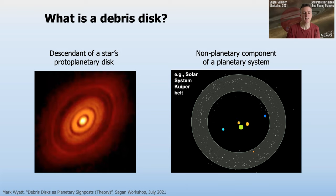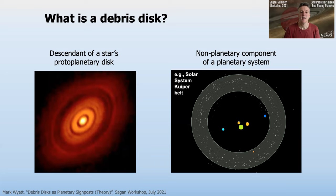Studying debris from that perspective is very fruitful — it tells us about how protoplanetary disks dispersed, about disk evolution, and about planet formation processes. But for a large part of this talk, I'm going to consider that whatever planet formation processes took place within a protoplanetary disk have run their course. The system is left with a star, a system of planets, plus debris. That's the other perspective on a debris disk: it's simply the non-planetary component of the planetary system. For the solar system, its debris disk is made up of comets orbiting in the Kuiper belt outside Neptune, the asteroid belt inside Jupiter's orbit, and the dust and gas from the breakup of those planetesimals.